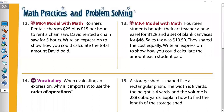Number twelve: 'Ronin's rental charge is $25 plus $15 per hour. David rented the chainsaw for five hours. Write an expression.' Per means multiply. So it will be: 25 + (15 × 5).